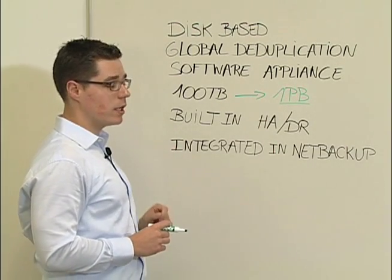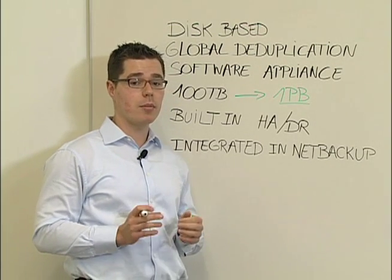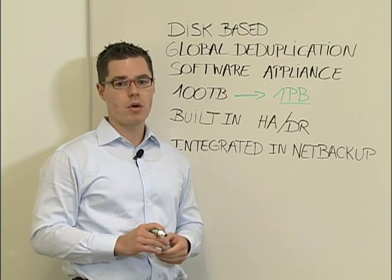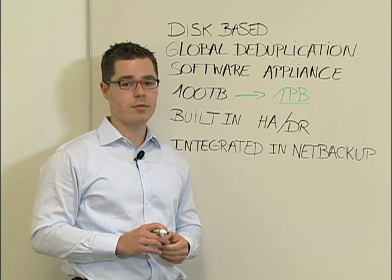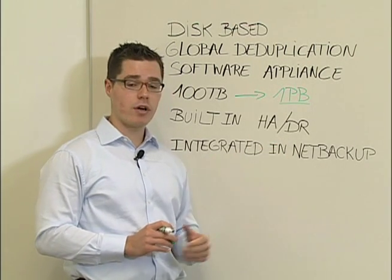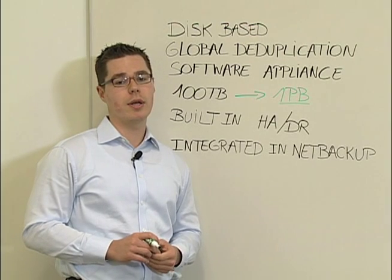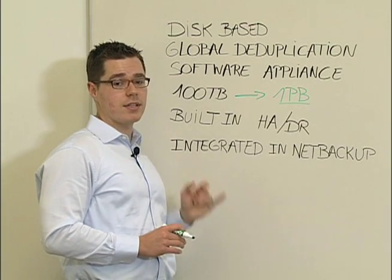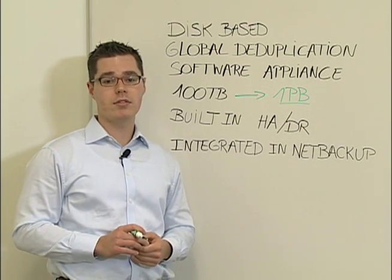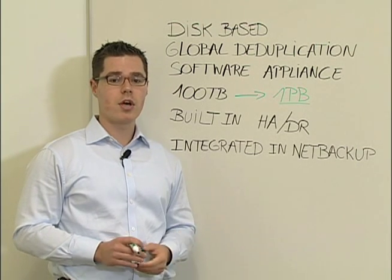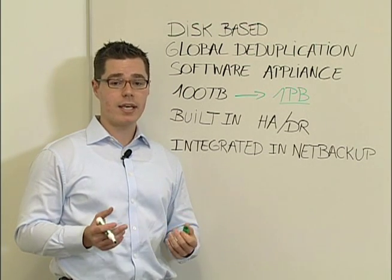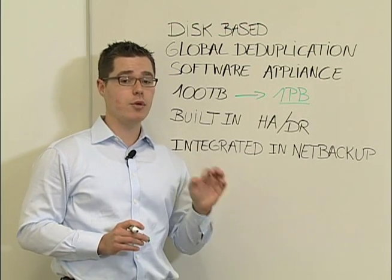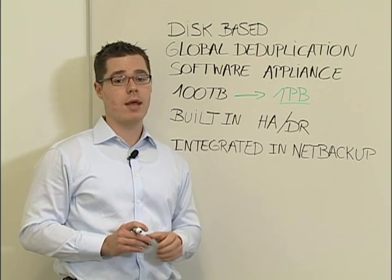The fifth point is built-in high availability and disaster recovery. We have built-in high availability which allows you to automatically fail over any services that fail during backup or restore. We also have a disaster recovery process built in which allows you to replicate your images to a DR site. And last but not least, integrated NetBackup — meaning we can manage everything, including replicas, through the NetBackup interface. The Ddupe engine is built into the NetBackup media server.